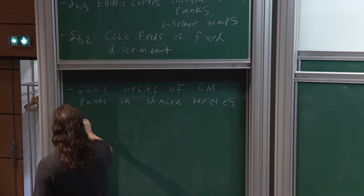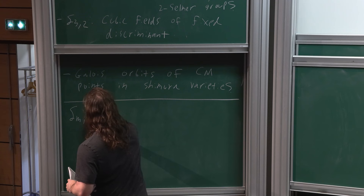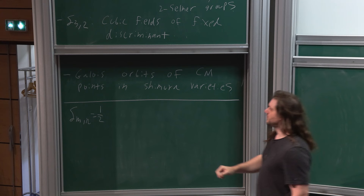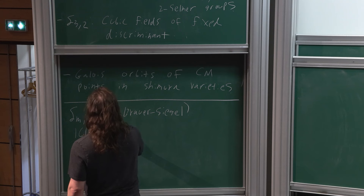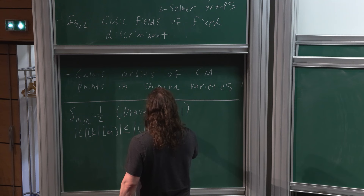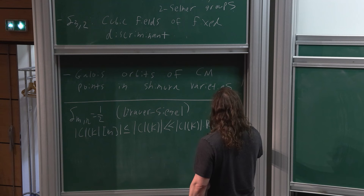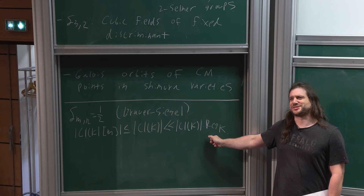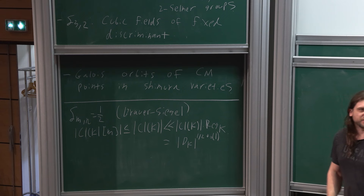In terms of what we expect: you can always take δ_MN to be one-half. This is due to the Brauer-Siegel estimate. The way it works is very simple: if you look at the M-torsion of the class group, it's bounded above by just the size of the class group, which is basically bounded above by the class number times the regulator. And this is of size square root of the discriminant, up to a factor of O(1).